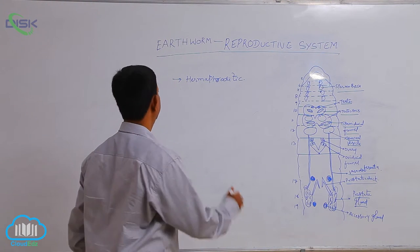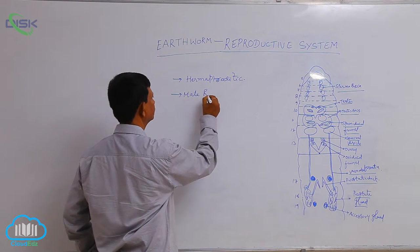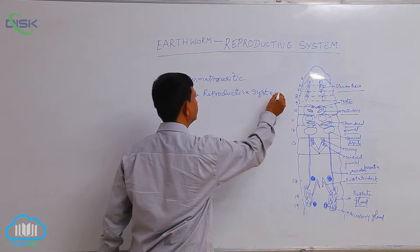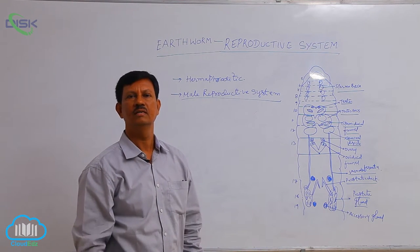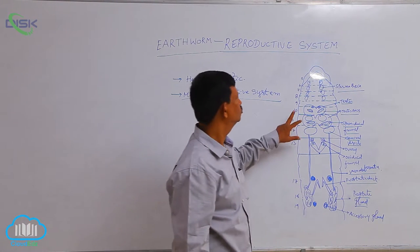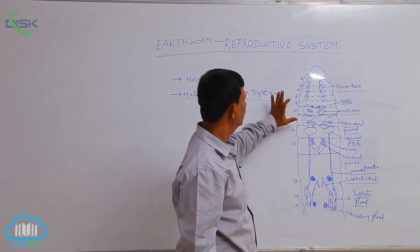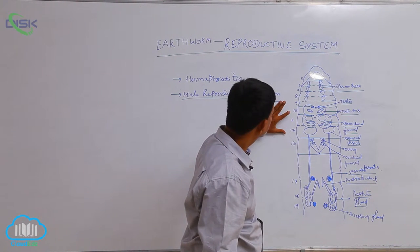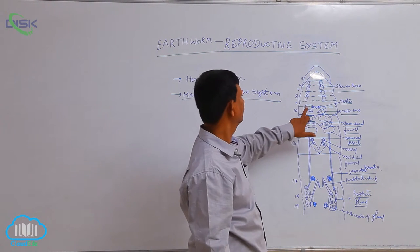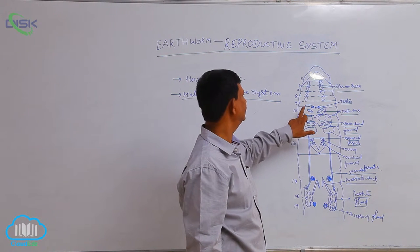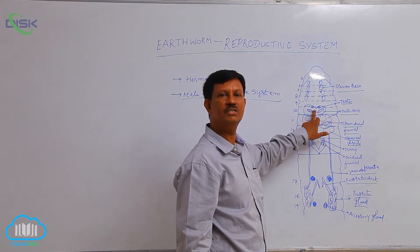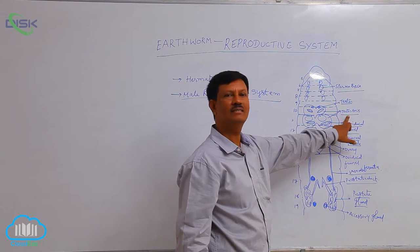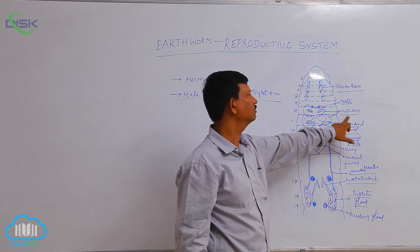First we discuss the male reproductive system. Two pairs of testes are found in the earthworm. The first pair is situated in the 10th segment and the second pair is present in the 11th segment. The first pair is attached in between the 9th and 10th segment. The main function of testes is the production of male gametes. Testes are found in testes sacs, which give protection to the testes.